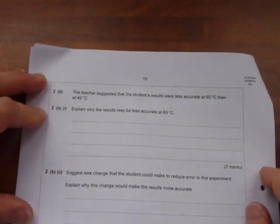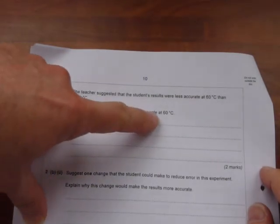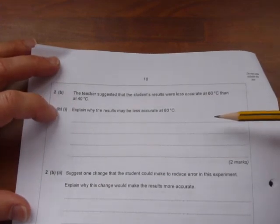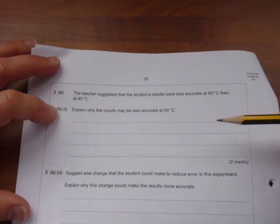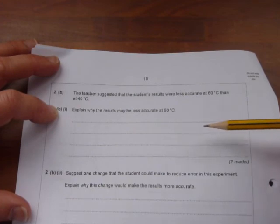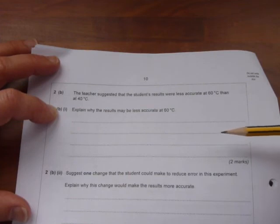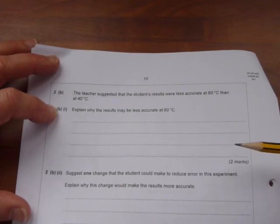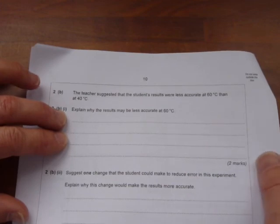Finally, two more questions about this experiment. Explain why the results may be less accurate at sixty degrees C than at forty degrees C. Well, at sixty degrees C, the hot liquid is likely to cool down quicker than it is at forty. That's one reason. Another reason is, if we looked back at the graph, at sixty degrees C, the reaction only took four seconds, and the error in measuring the rate of a reaction starting and stopping the stopwatch is going to be quite big if the whole experiment only takes four seconds. Whereas at forty degrees C, when the reaction took a longer time, then timing is less of an error. So there are two possible answers to that.